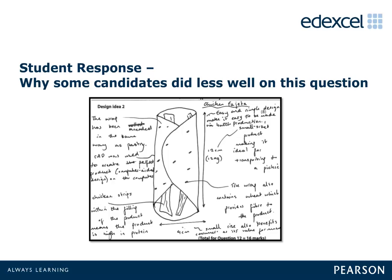Problems occurred for candidates where they either repeated answers or rewrote the specification point, rather than showing how their chosen design met the specification point. Vague inaccuracies or omitting answers completely meant that some candidates were unable to access the full 16 marks.